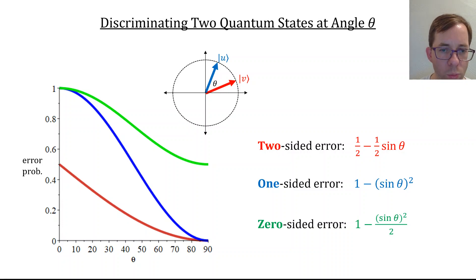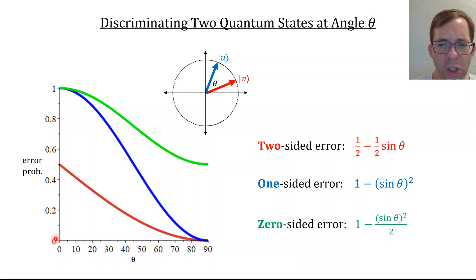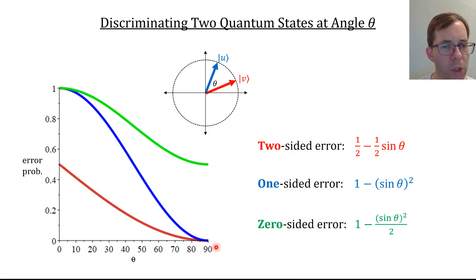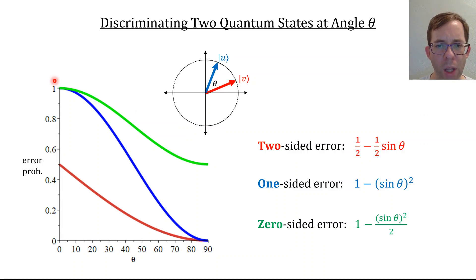If you notice, I was always considering in that video the angle theta ranging between zero degrees—meaning u and v are identical, in which case you can't discriminate between two states that are the same—and 90 degrees, which is perpendicular, in which case you can actually discriminate between them perfectly. The green curve represented a suboptimal distinguishing algorithm that we discussed.